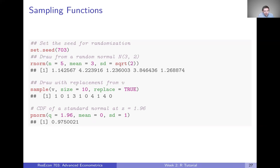As we get farther into the course, we're going to be doing some numerical simulations, and that's going to depend on some random sampling. So it's going to be useful to talk about sampling functions and other distributional functions that you might want to use. One thing worth mentioning is that anytime you're doing anything with randomness in your code, you're going to want to set a seed first.